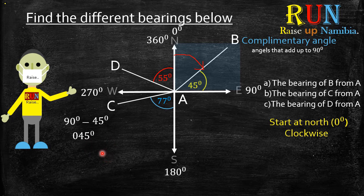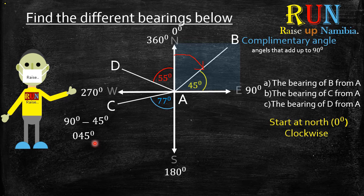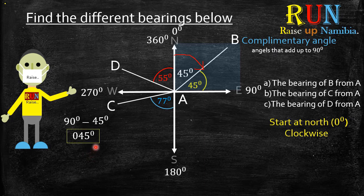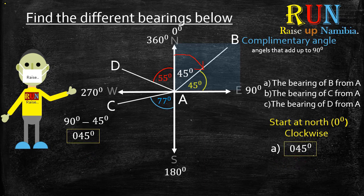Now remember guys, once you are working with bearings, you always give your answer as a 3 digit. So if you get a 2 digit answer, for example like this 45 over here, you put a 0 in front. So this is our answer for A.